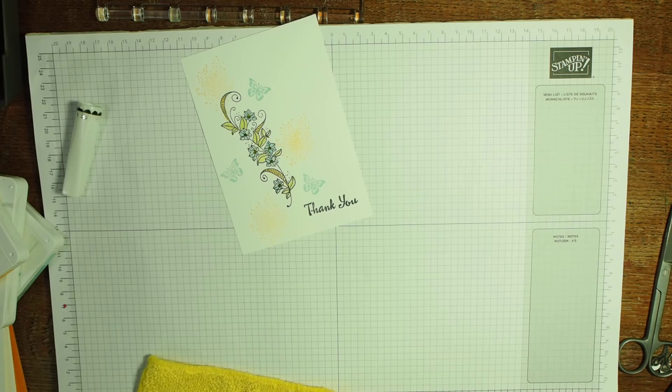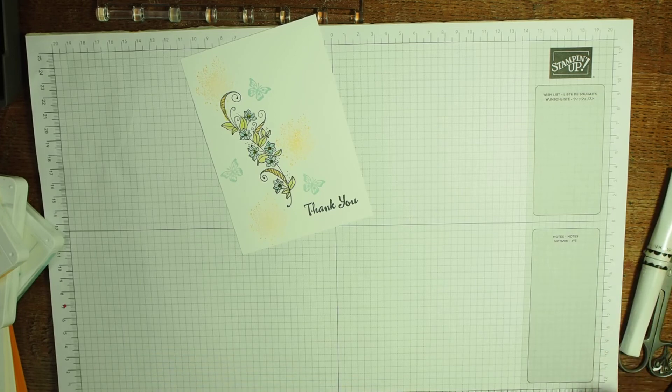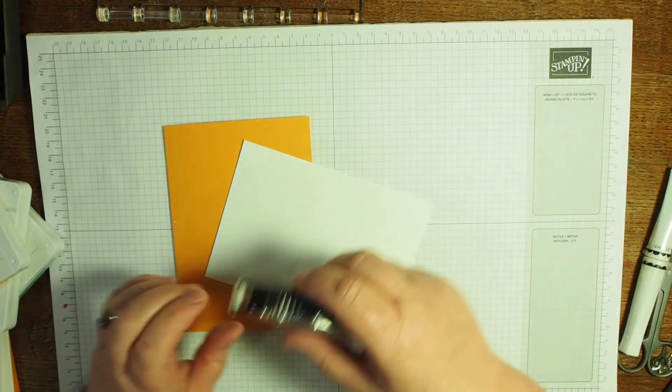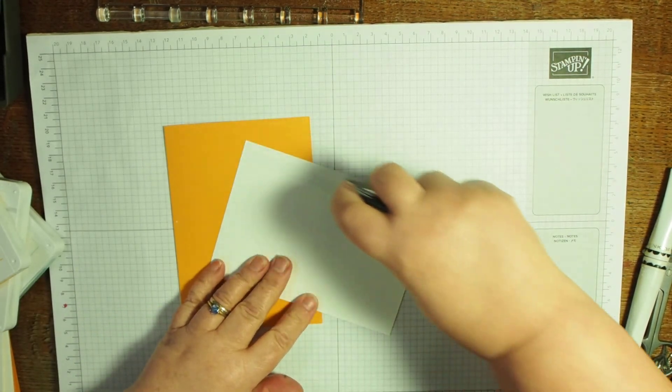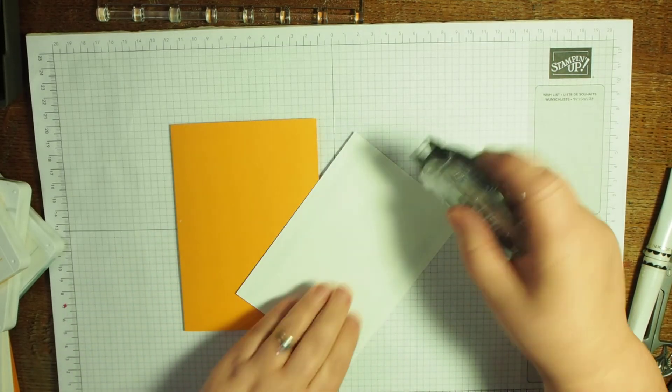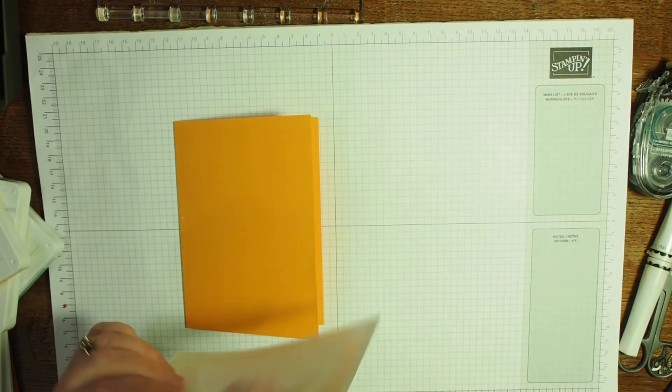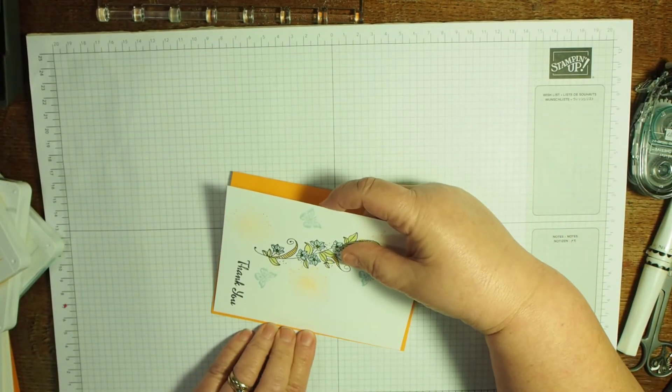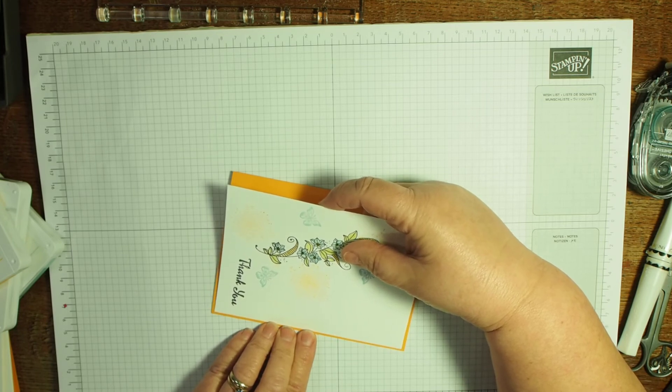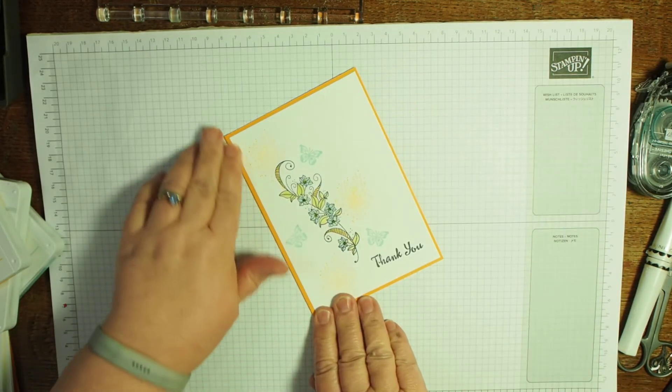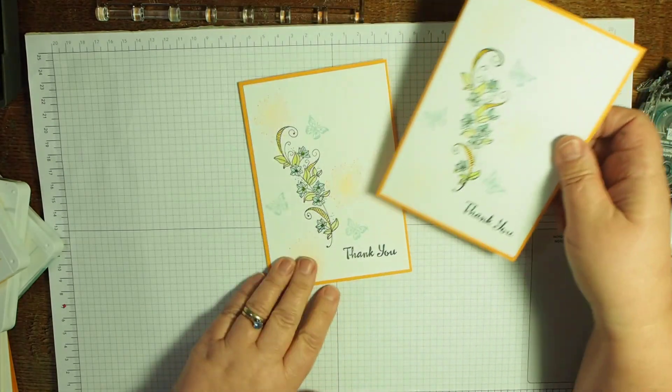Clean your Wink of Stella so that the next time you use it you're not going to transfer the last color you used. I've got a Mango Melody card base here. I'm just going to pop this—I'm just going to use a bit of snail, quick and easy. There we go, I just need to line that up, and somehow I find it easier if I do it this way. Voila! There we go, so thank you cards ready, very similar. The ladies are receiving something very similar.